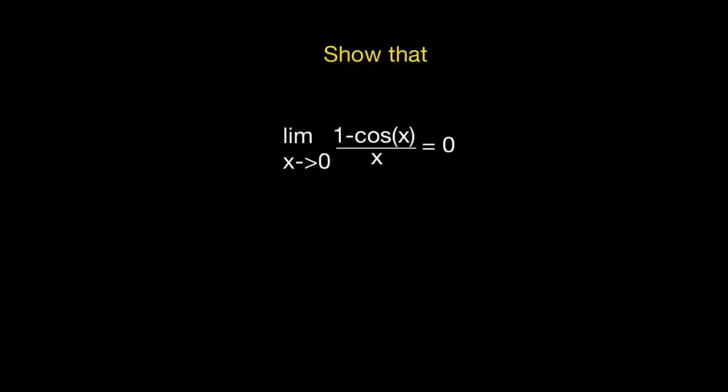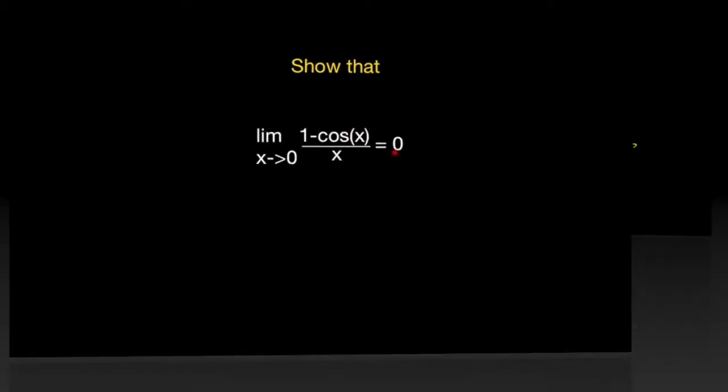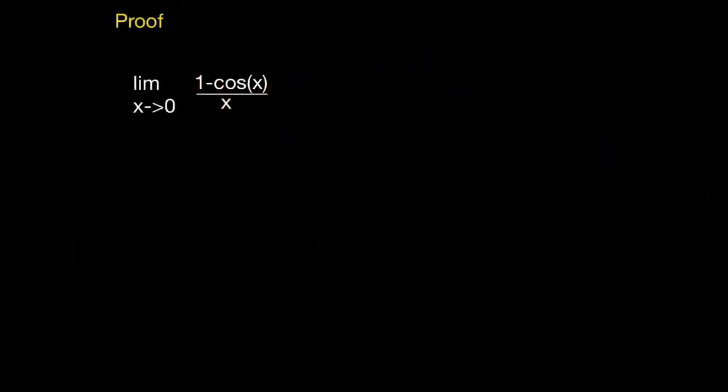So now we're ready to show that the limit as x approaches 0 of this goes to 0. If we multiply this by 1, we're not going to be changing the value of the expression. So let's multiply by 1 here, and we've basically done nothing up to this point.